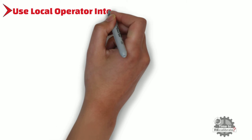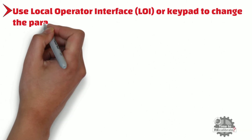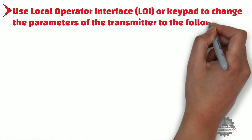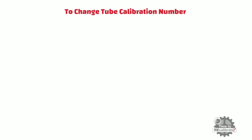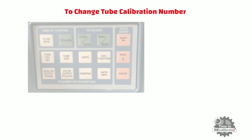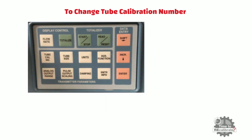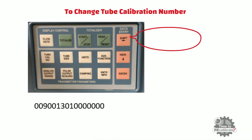Step 2: Use the local operator interface or keypad to change the parameters of the transmitter. All these details can be found on the nameplate of the Rosemount 8714D Flow Tube Simulator. First, in order to change the tube calibration number, press the tube cal number button and the existing cal tube number will display.